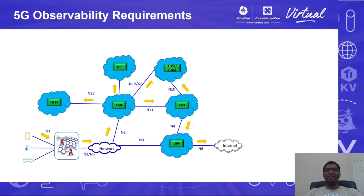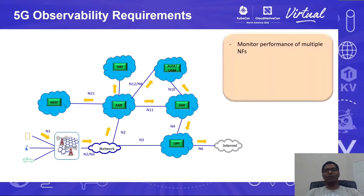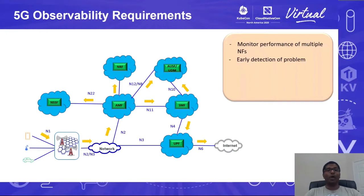This brings our first requirement: we should be able to continuously monitor the performance of multiple network functions. As messages are exchanged between different network functions over different network interfaces, it's highly likely that there can be a fault anywhere in the network at any point of time. This brings our next requirement — we should be able to detect the problem at very early stages by some sort of automated or alerting mechanism, rather than people staring at different GUIs for anomalies.